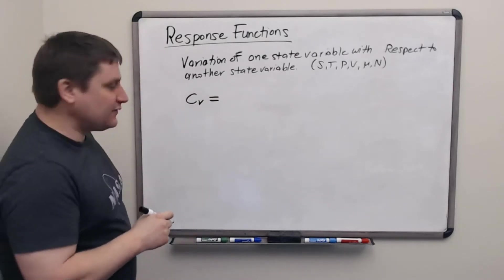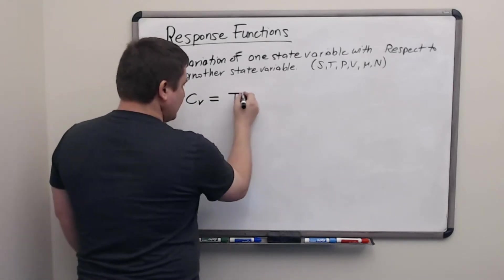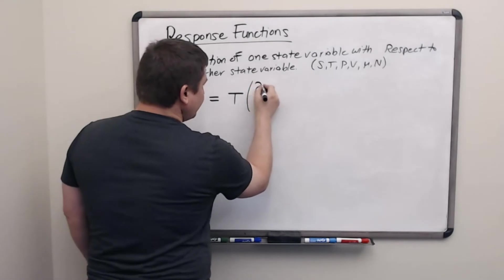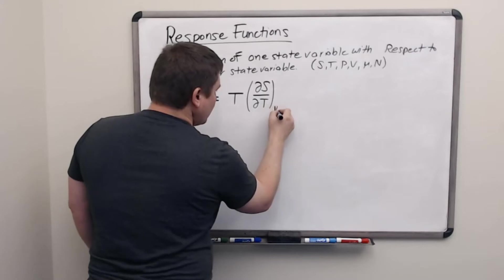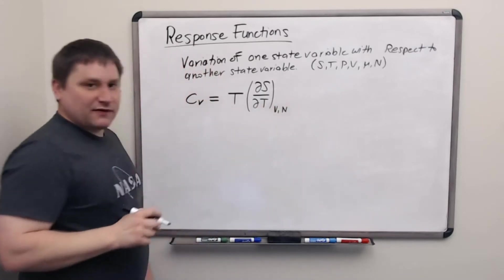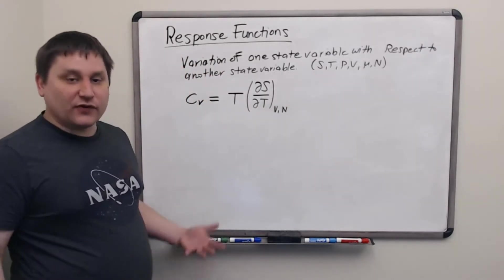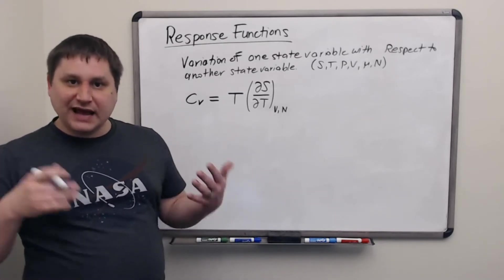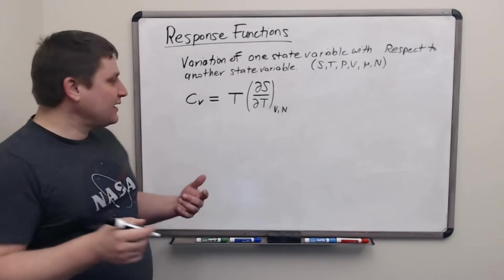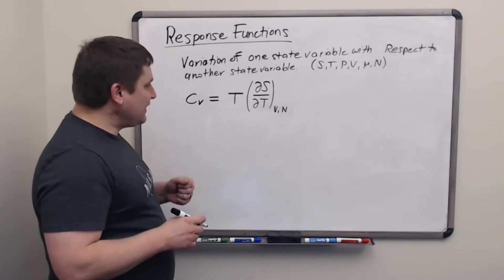Here's one that we've used for a while, heat capacity. Remember that we can write an expression for the heat capacity at constant volume in terms of a derivative of the entropy with respect to temperature. So that's the definition there.